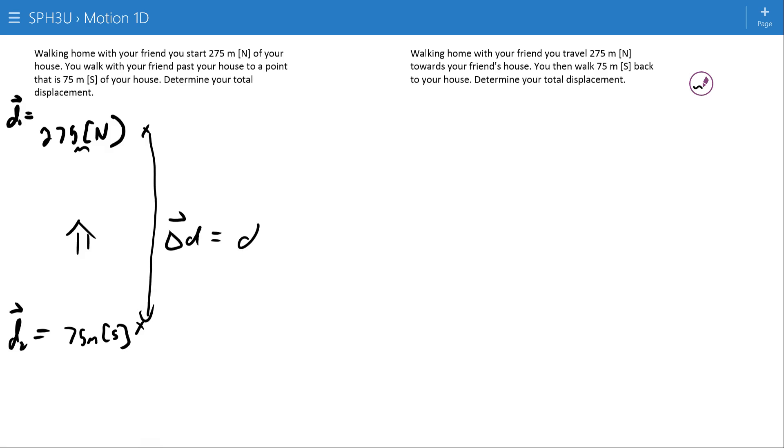In this case, we'd use this formula, D2 minus D1, and we would get 75 meters south minus 275 meters north.